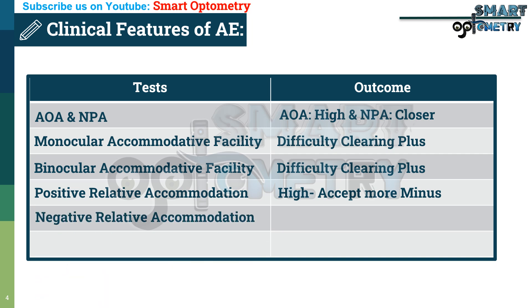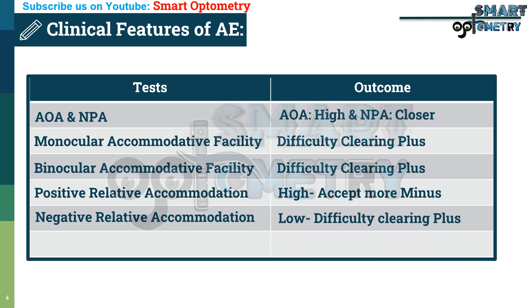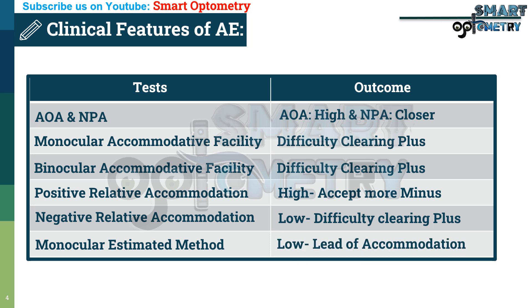5. In negative relative accommodation, the patient will face difficulty in clearing the plus lens, so it will be low. 6. In monocular estimated method (MEM), there will be a lead of accommodation, or low MEM value.